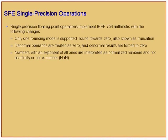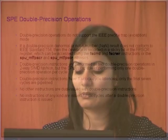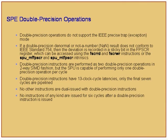There's a 13-cycle clock latency: seven cycles to perform the double-precision operation, and then six cycles as latency. Double-precision on the current Cell BE hardware is more expensive — not as good as single-precision, but still pretty good compared to other architectures. Only one rounding mode is supported: round towards zero. Denormal operands are treated as zero. There is no support for infinity or NaN. No instructions can be dual-issued with double-precision instructions, and only the final seven cycles are pipelined.